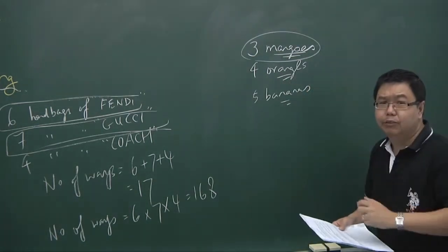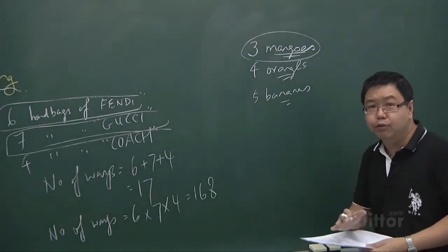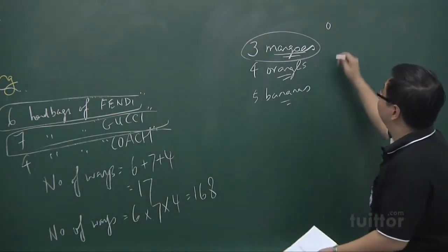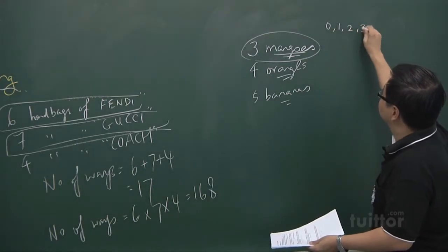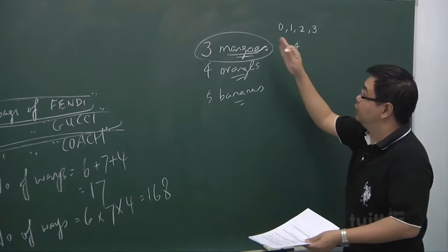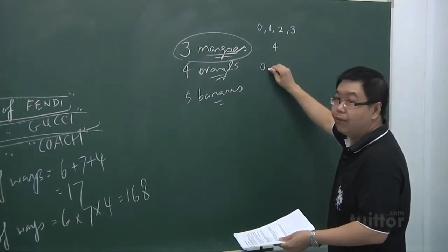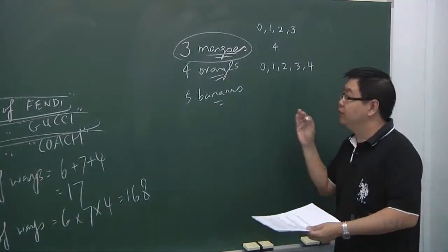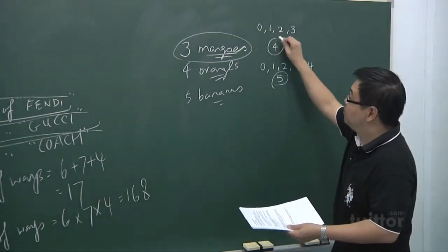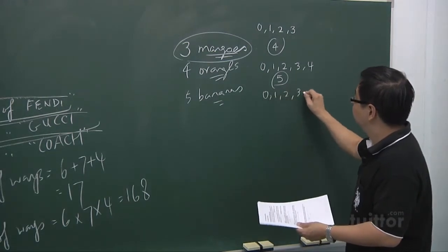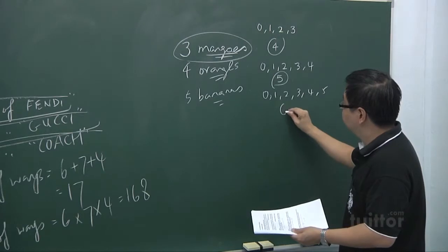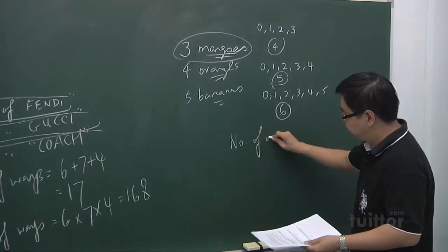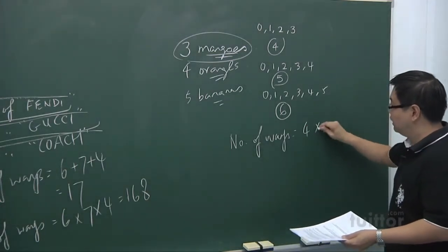She wants to bring some or all of these fruits to a picnic. For the three mangoes, you can choose zero, one, two, or three — so there are four ways. For the four oranges, you can choose zero, one, two, three, or four — so there are five ways. For the five bananas, you can choose zero, one, two, three, four, or five — so there are six ways. Therefore, the number of ways is four times five times six.